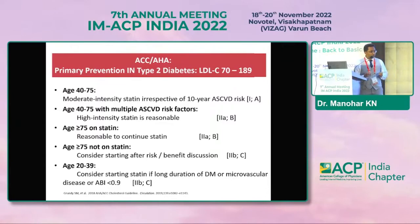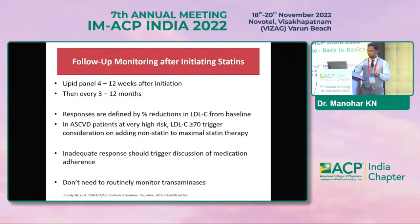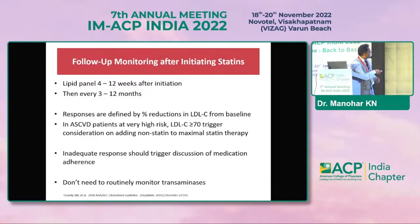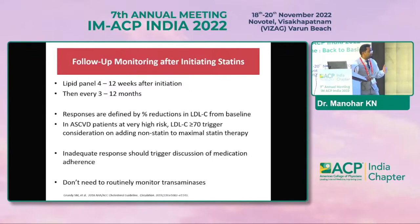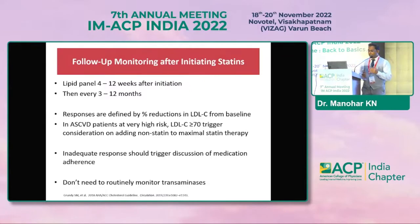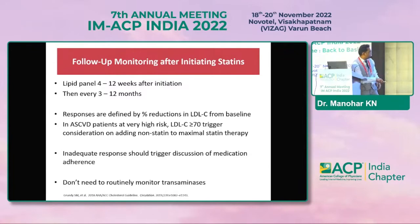For follow-up: check the lipid panel 4 to 12 weeks after initiation, then every 3 to 12 months depending on clinical response. Response is defined by the percentage LDL reduction from baseline, which determines high versus moderate intensity classification. For very high-risk ASCVD patients with LDL above 70, consider adding non-statin agents to maximize benefit. Routine measurement of transaminases is not necessary.